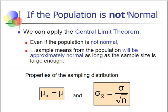The second case is if the population is not normal — we don't know the distribution of the population. How, then, are we going to find the probability? Some scientists studied this problem and came up with a solution known as the central limit theorem.